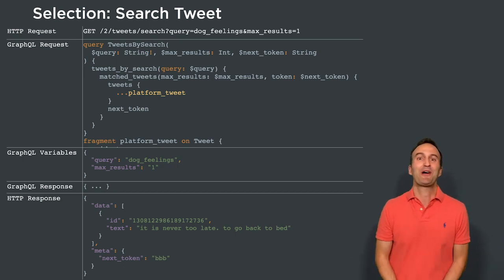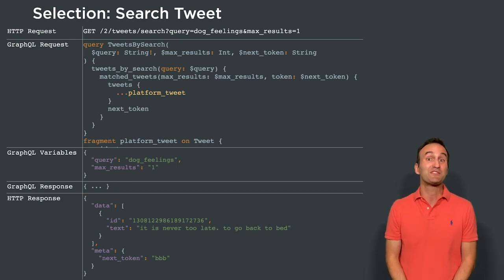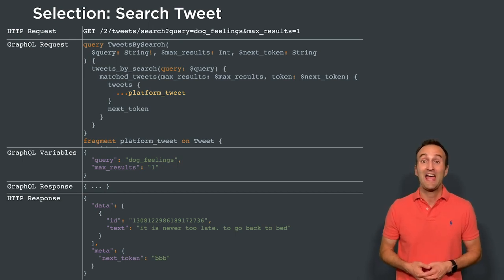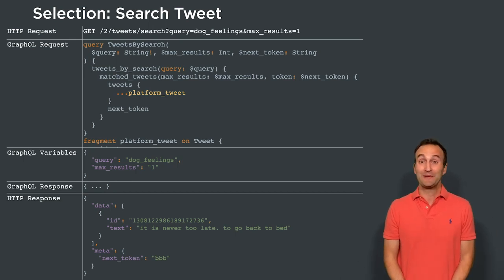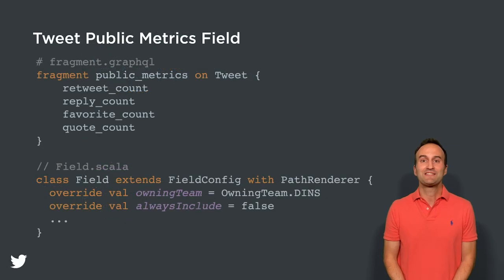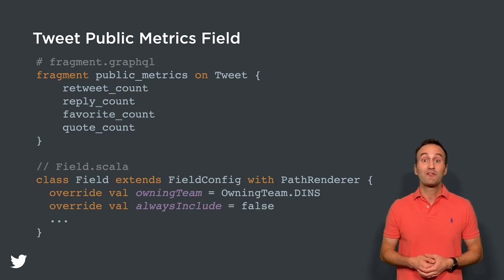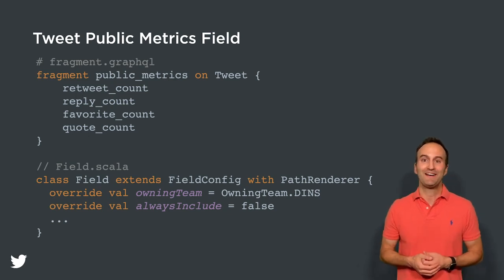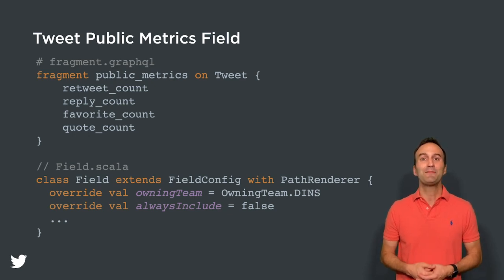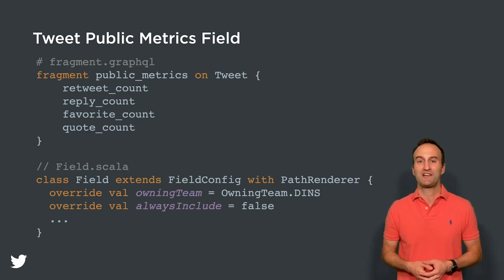A new requirement comes in — our product managers want to start exposing tweet metrics through our API. This new field will have a separate engineering team working on it, will be optionally returned only if customers request it, and will be named public_metrics. On screen, you can see how this new field will be configured. As with the tweet ID and tweet text fields, we first define a GraphQL fragment to retrieve the data we need to render, and then include a field.scala file — notably this time setting always_include to false. With this new field defined, the API platform will make it available to any API customer that specifies they want this optional field.